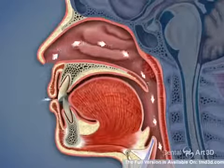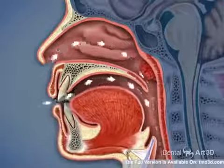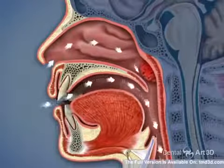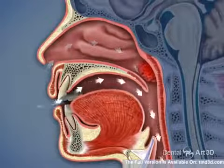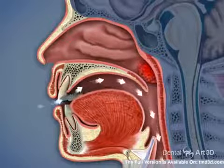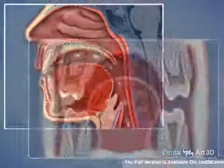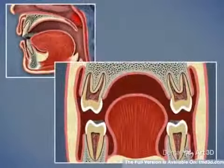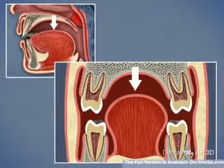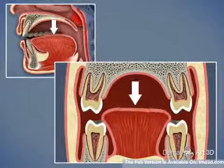As the tonsils and adenoids become swollen, they develop into an obstruction for nasal breathing, and slowly, mouth breathing begins to be the primary intake of air into the body. In order to breathe through the mouth, the lower jaw comes down, and the tongue comes off the palate and settles on the lower teeth.